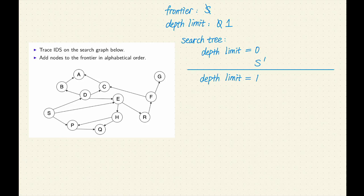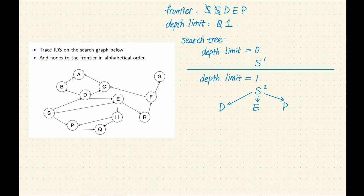Add the initial state S to the frontier. S is the second node expanded. Remove S from the frontier. S is not at the depth limit, and S has three successors: D, E, and P. Let's add them to the frontier in alphabetical order and also add them to the search tree. The most recent node added to the frontier was P, so P is the third node expanded. Remove P from the frontier. P is at the depth limit, so we do not generate P's successors.